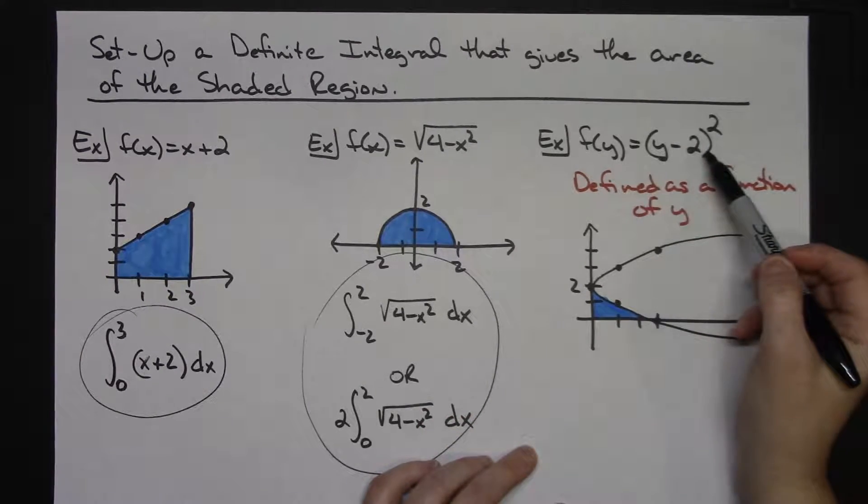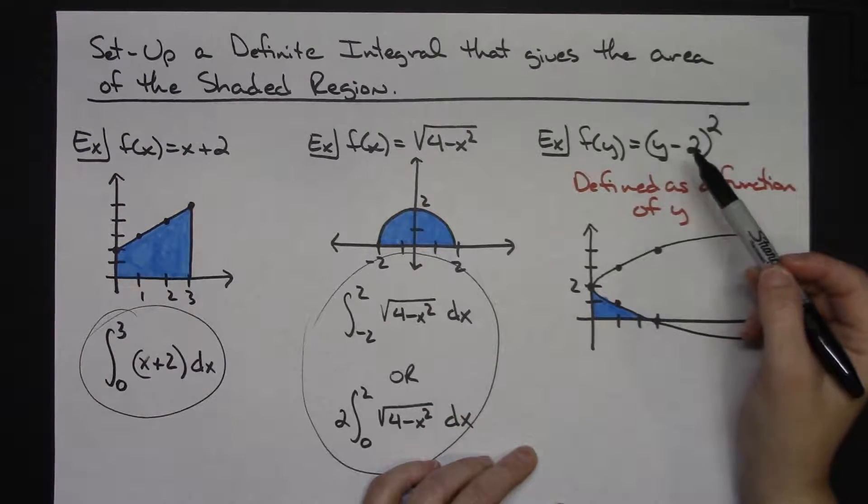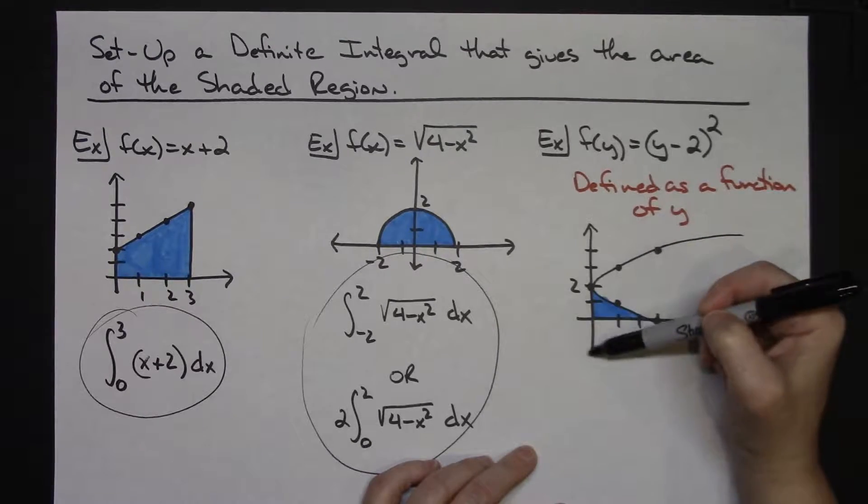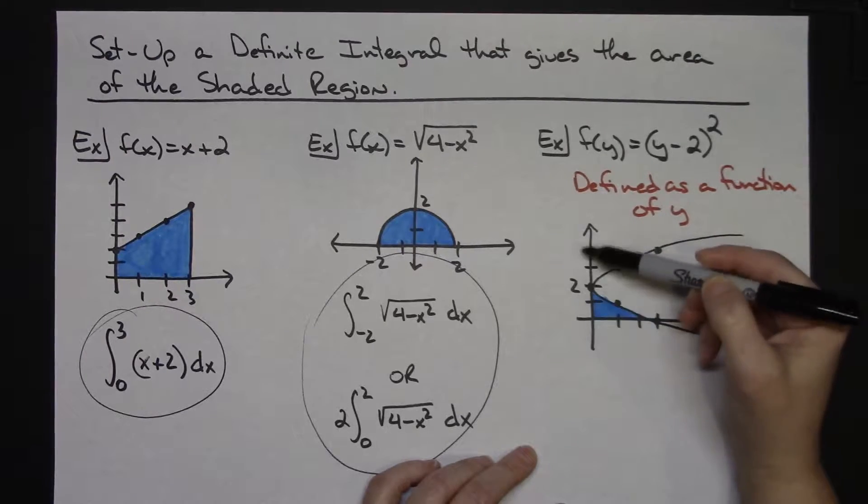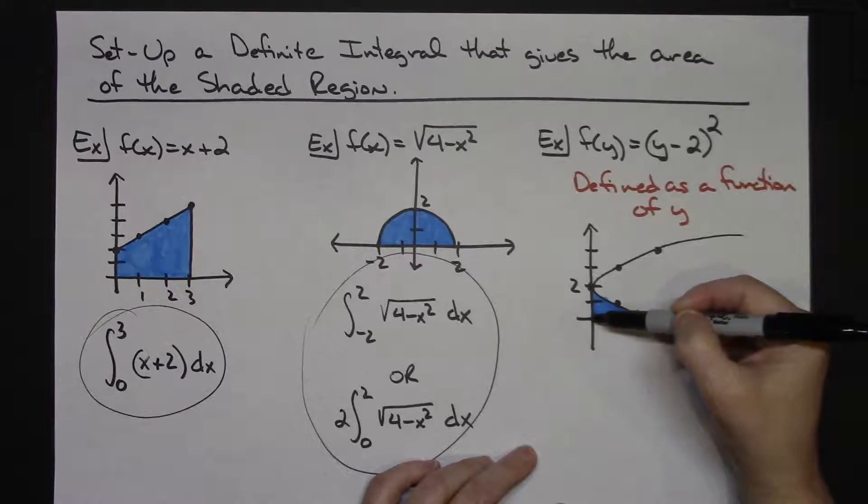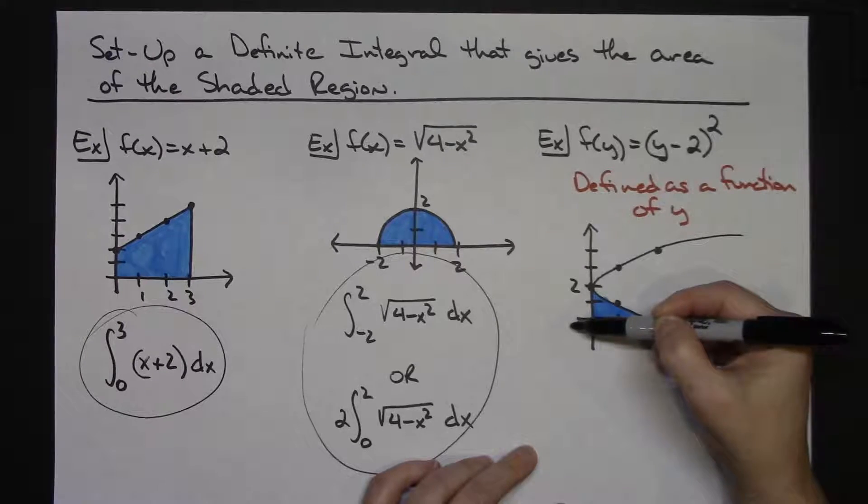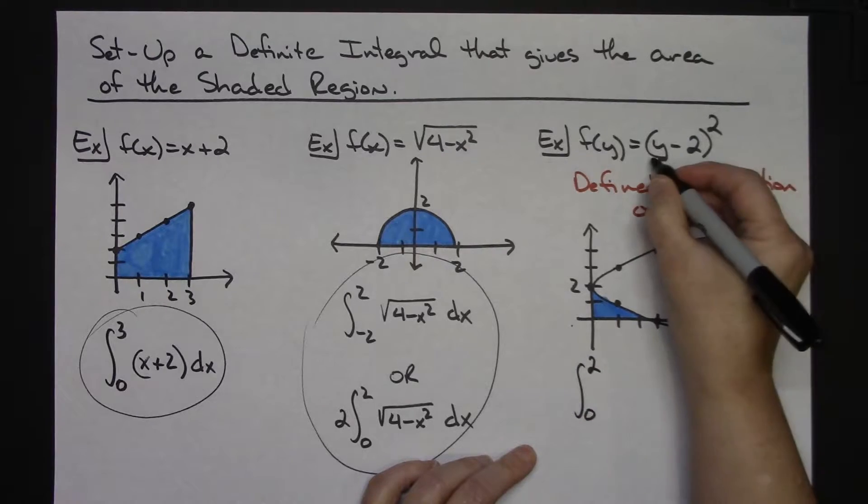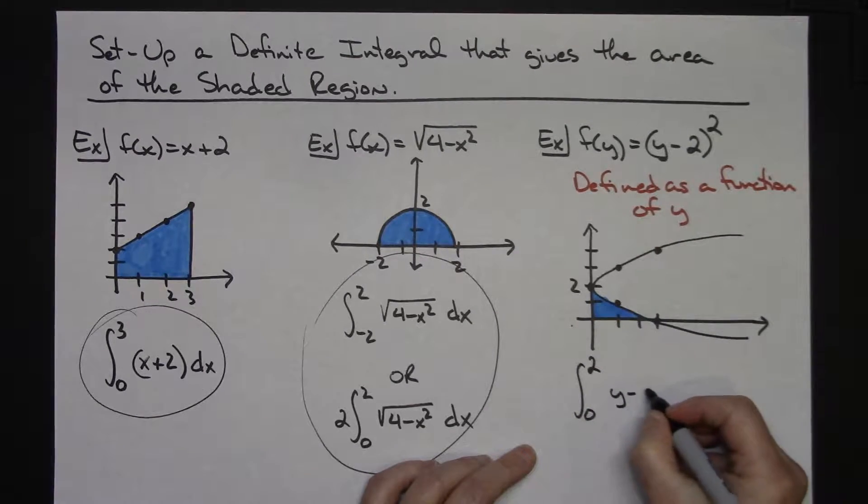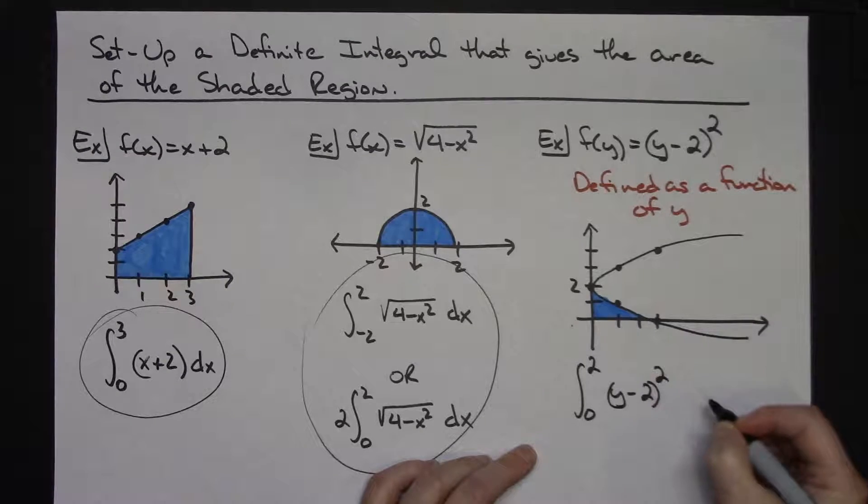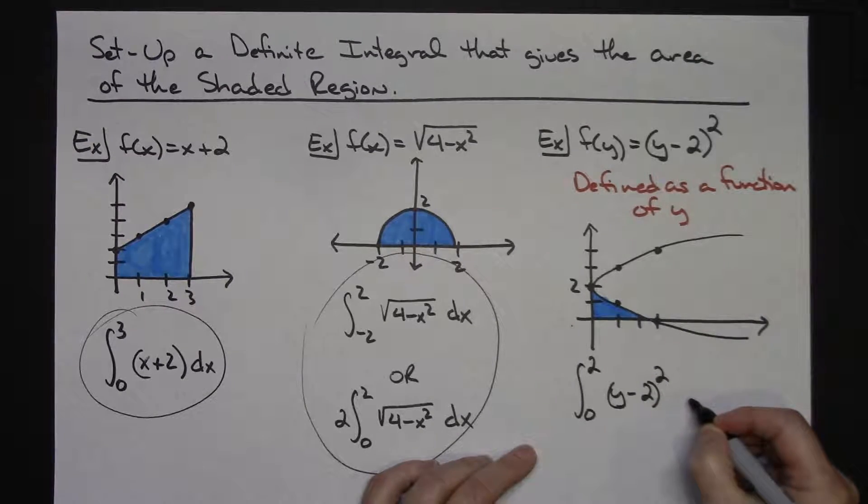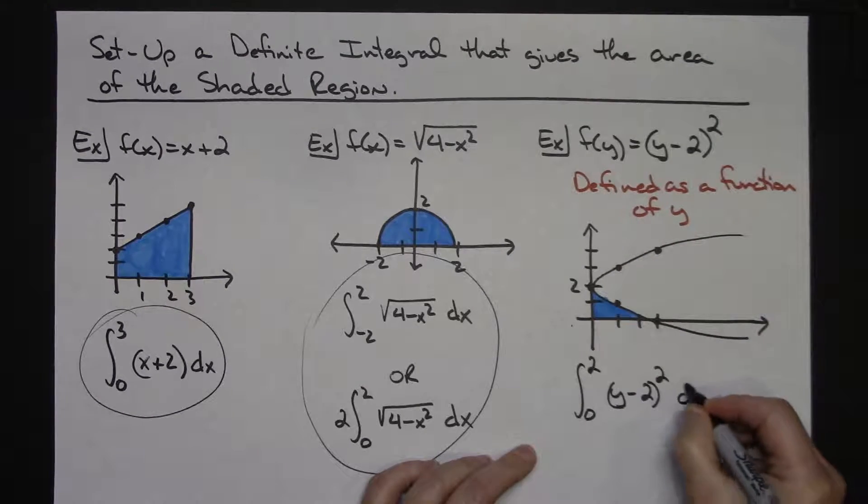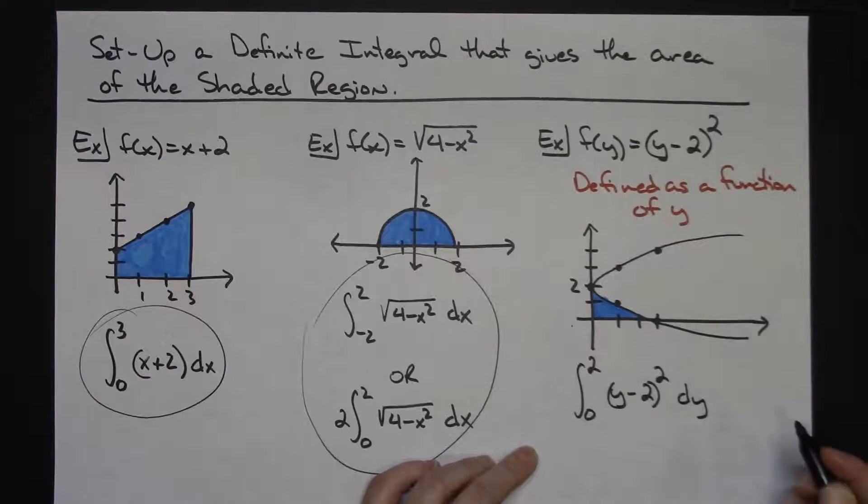Now on this one, my function's in terms of y. So when I want my limits of integration, I'm going to need to make sure that I look on my y-axis. So the highest point here in this little shaded region, I would be running from 0 to 2 on my integral. The function, which is in terms of y, would be y minus 2 quantity squared, and then my variable of integration, since I'm doing everything off the y-axis, the equation is in terms of y, then I would have a dy right there.